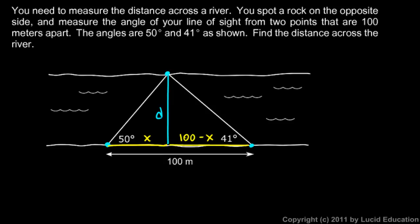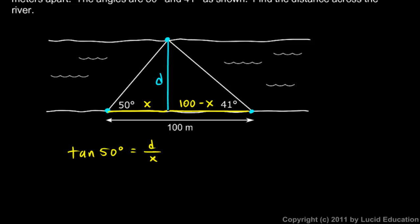I'll look at the one on the left, and I'll say that the tangent of 50 degrees has to be D over x. And then solve that for x. x is going to be D over the tangent of 50.